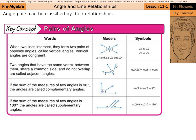Angle pairs can be classified by their relationships. When two lines intersect they form two pairs of opposite angles called vertical angles. Vertical angles are congruent. So we can see two intersecting lines: angle 1 is congruent to angle 2 and they're vertical, and angle 3 is congruent to angle 4 and they are vertical. The symbol for congruent is an equal sign with a little squiggly on top.